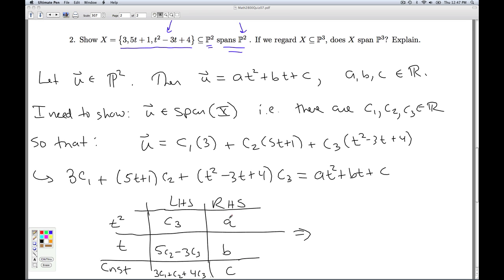So what this does is we are given a, b, and c. We are having to find c1, c2, and c3. We are given a system of linear equations. c3 equals a, 5c2 minus 3c3 equals b, 3c1 plus c2 plus 4c3 equals c.